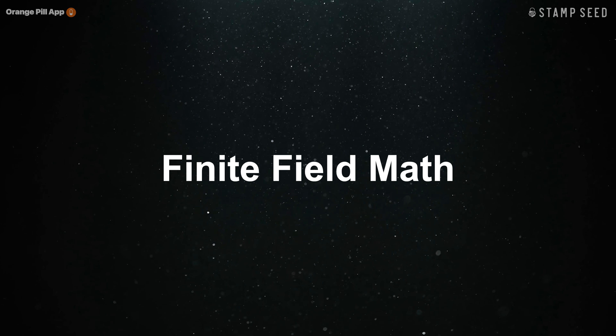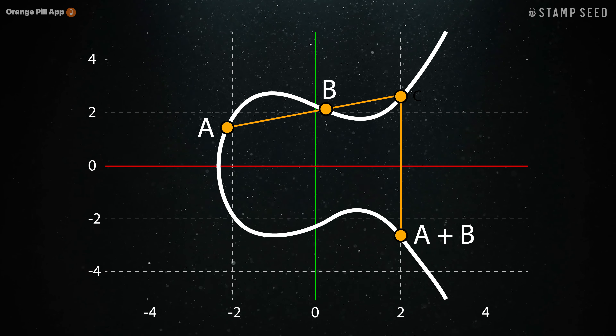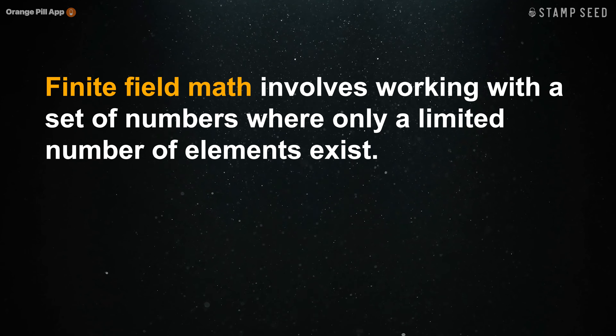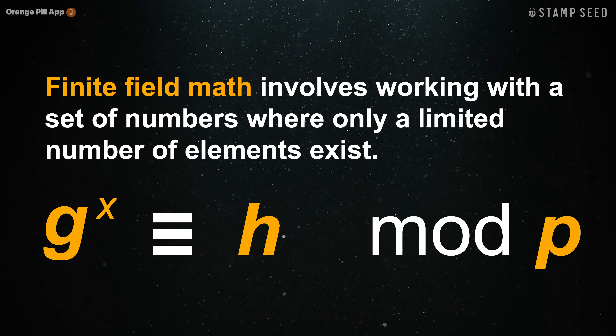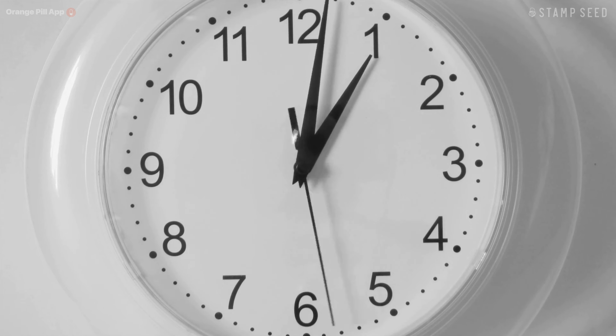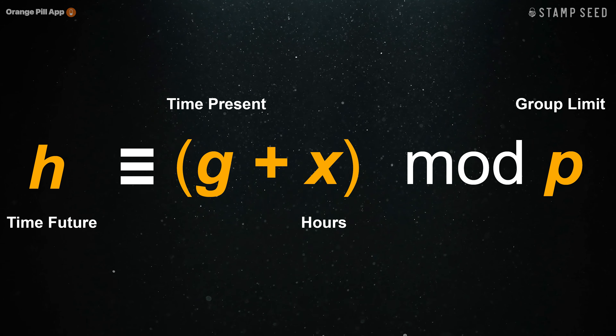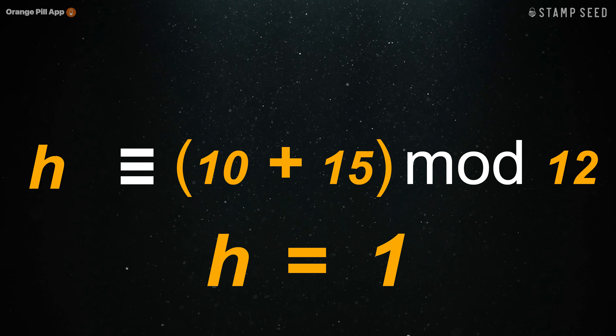This problem arises when you apply finite field math to elliptic curves. Finite field math uses operations such as addition, subtraction, multiplication, and division in a way different from normal math. It works more like a clock, with the maximum being 12 hours. If you exceed this amount, you start again at 1. For example, if it is 10 a.m. and you have 15 hours, you cycle around the clock until you end up at 1 a.m.